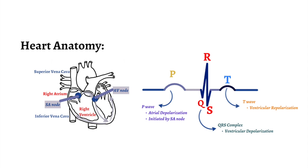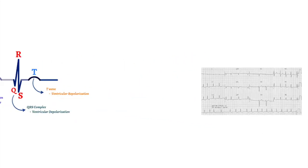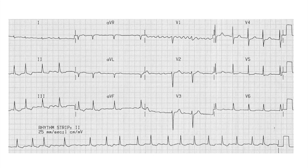To see if the heart is beating regularly, we expect to see an equal amount of spacing from one peak, or R-wave, in the QRS complex to the next R-wave in the next QRS complex.